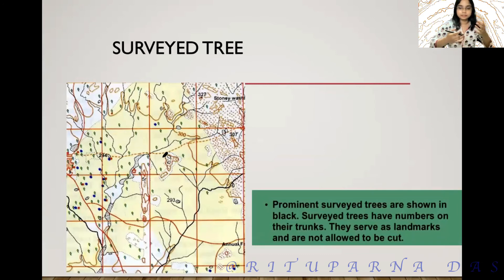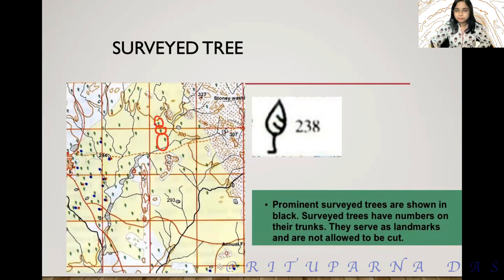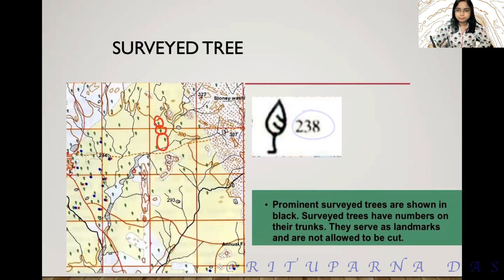We can also use survey trees to find the height of a place. Generally in topographical maps trees are shown in green color, but sometimes a few trees are drawn in black color — those are known as survey trees. Please keep in mind: this height is not the height of the tree itself, it is the height of a particular place that is nearby.